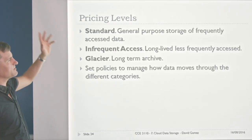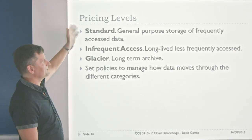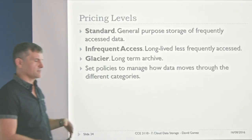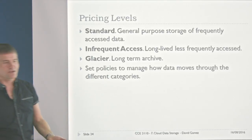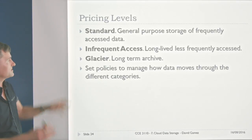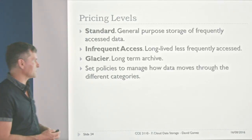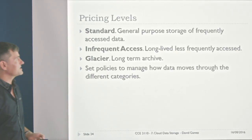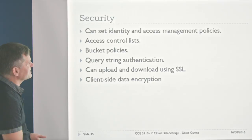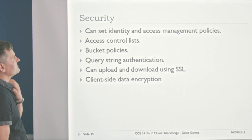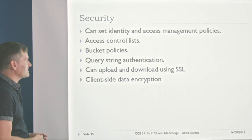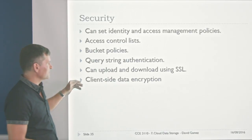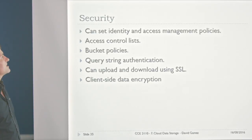There are different pricing levels: standard, where you can get data quickly but it's a bit more expensive, and then infrequent access and Glacier for archiving data for a long time — maybe slow to access, but you save money if you have huge amounts of data you just need to archive. You can even have policies that automatically move your data to Glacier if necessary. You can also do detailed access policies to limit people's access to particular buckets, and you can use SSL encryption to access the cloud, plus client-side encryption if needed.